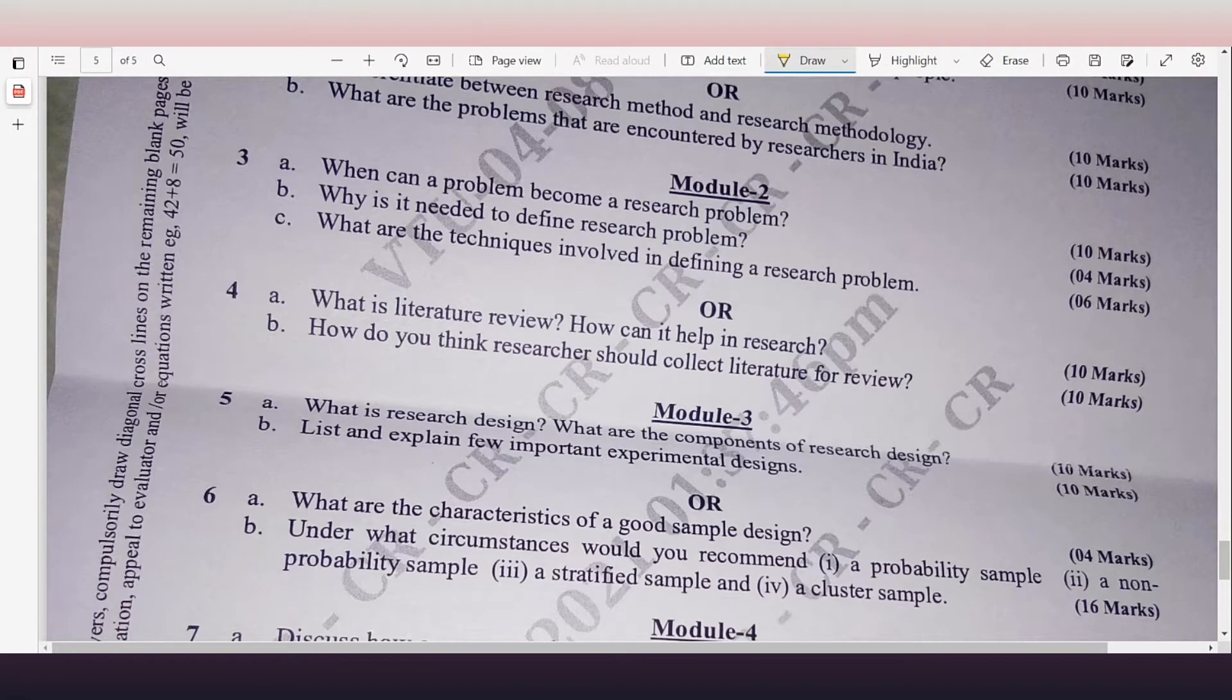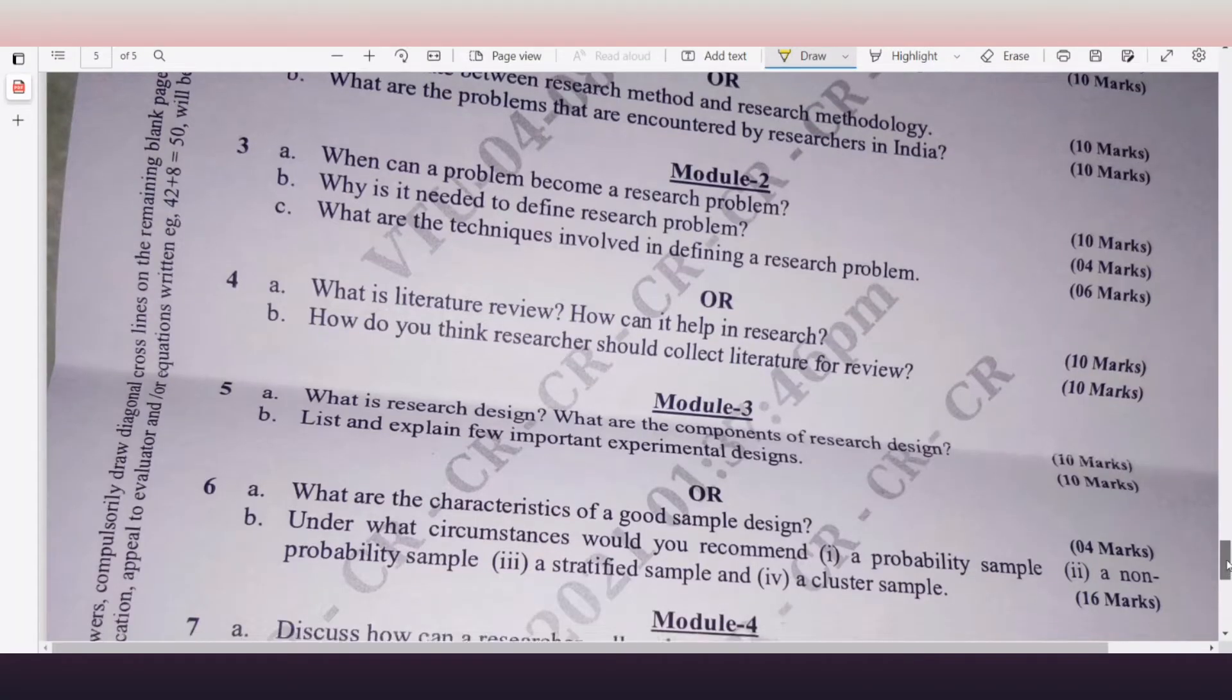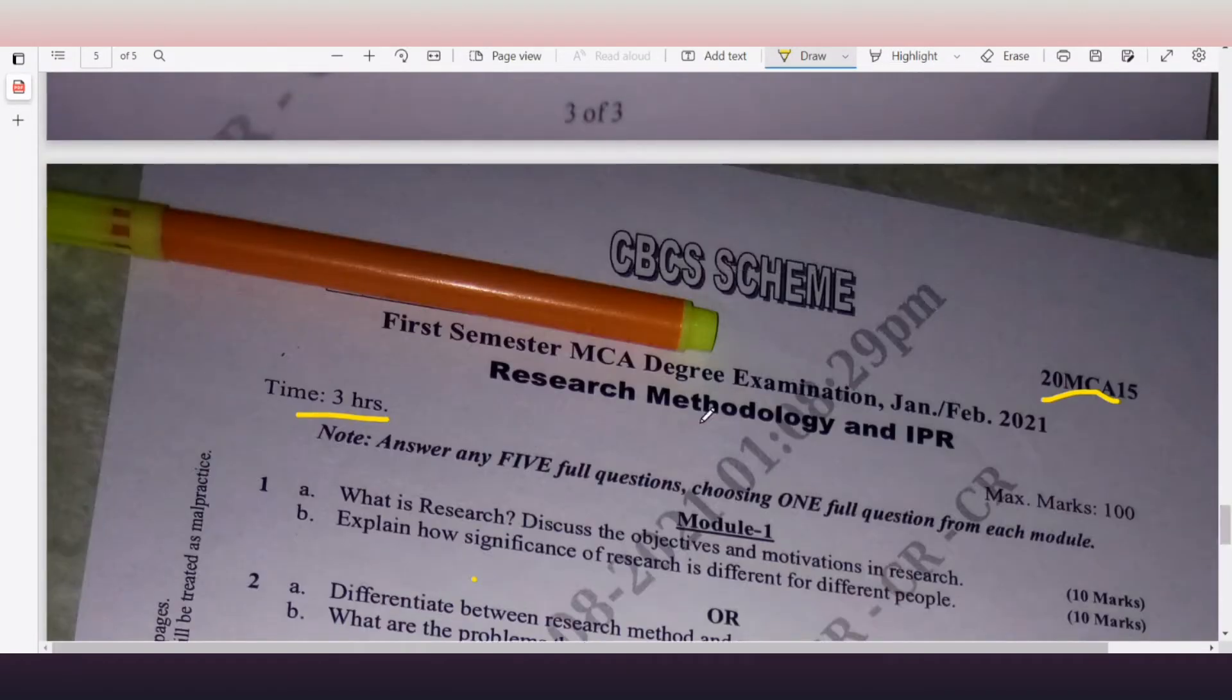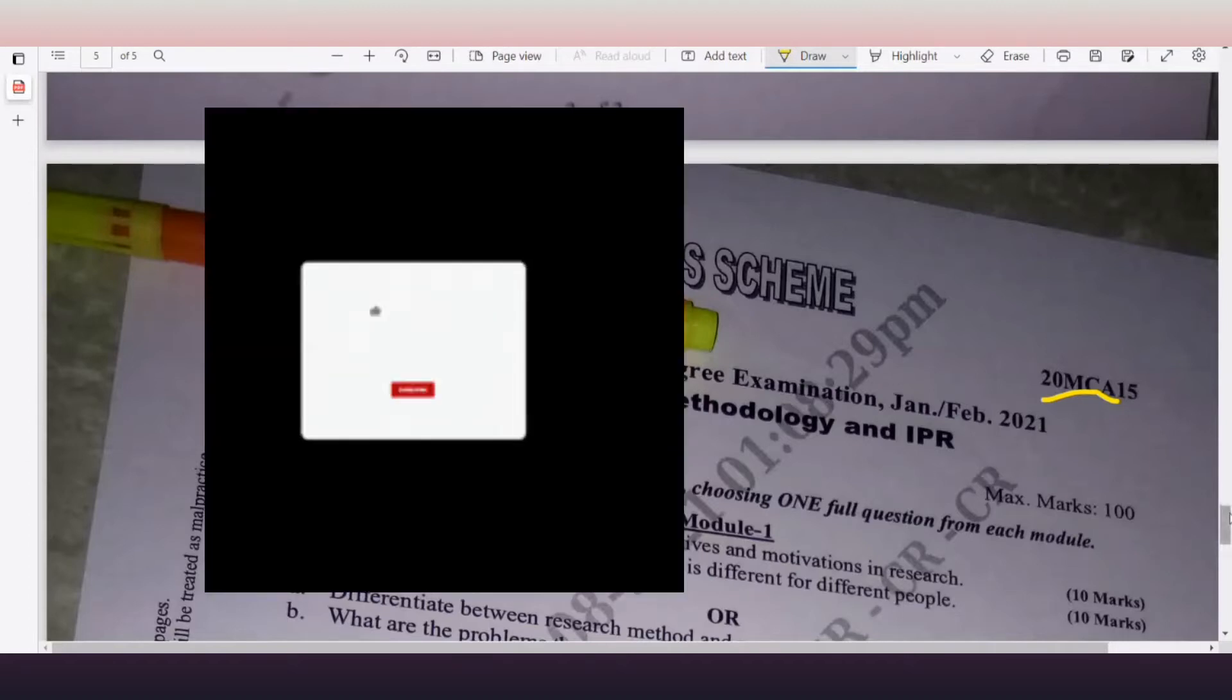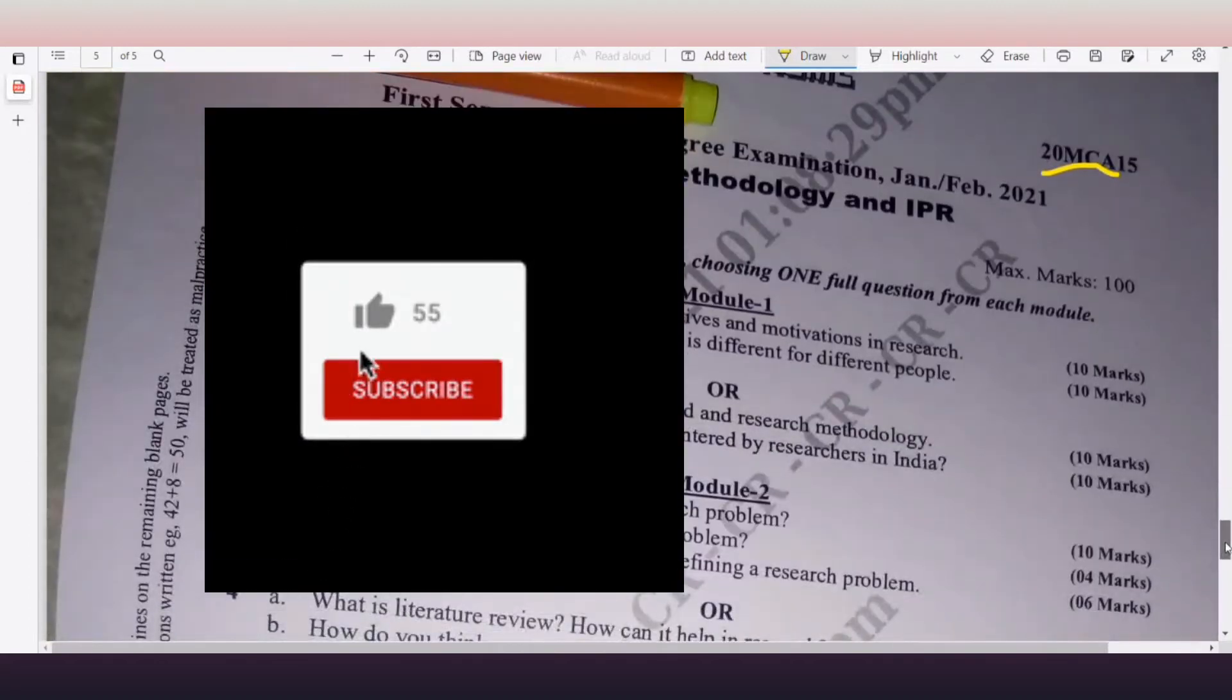Hello everyone, welcome back to Learn and Clear Exams with me. The objective of today's video is that I would like to show the question paper of Research Methodology and IPR. Subject code is 20 MCA 50, first semester MCA Degree Examination 2021. Time duration is three hours.